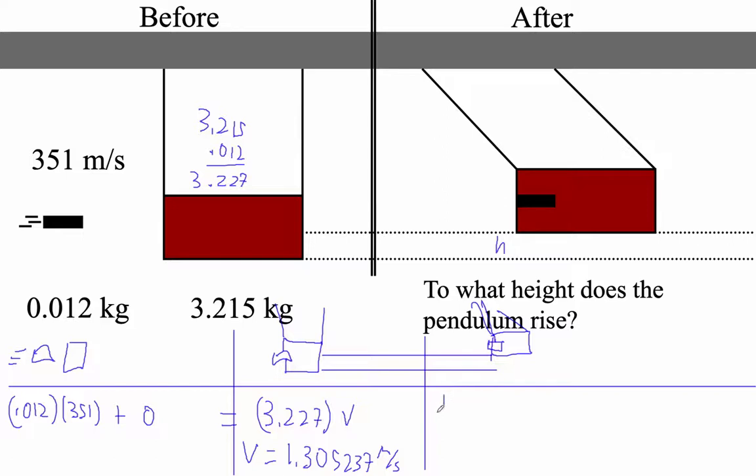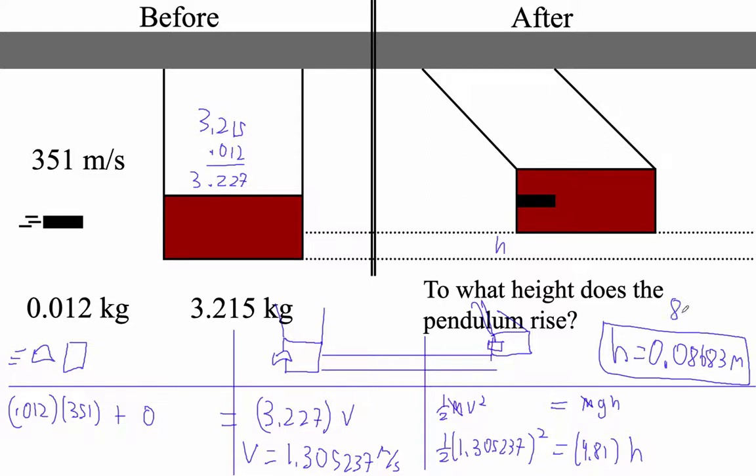So what I'm going to do is I'm going to say 1/2 mV squared that we have here equals MGH. That's all we can do. When things swing like that, the only way we can solve it is with energy. So we say kinetic energy equals potential energy. The masses do cancel, because the mass doesn't change after the bullet sticks in it. So I can go 1.305237 squared equals 9.81 times H. And we can solve for H. So squared times 0.5 divided by 9.81. And I get that the H is 0.08683 meters. That is 8.68 centimeters.